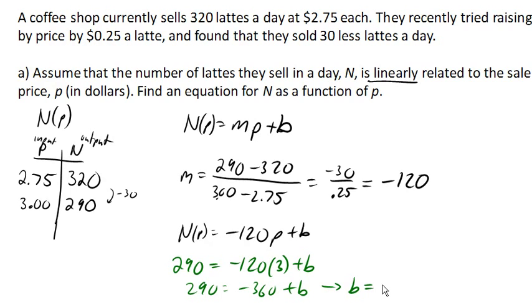Putting that all together, we have a slope of negative 120, a b of 650 tells me my equation is N of p equals negative 120p plus 650. And that's the first step in solving this problem.